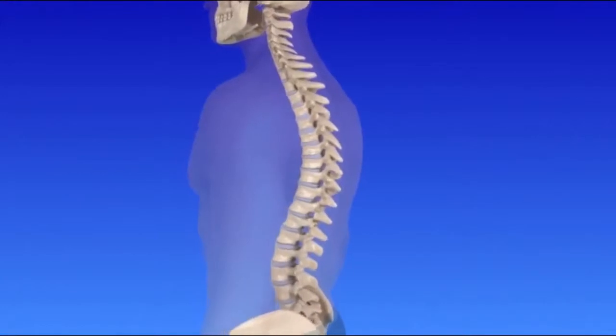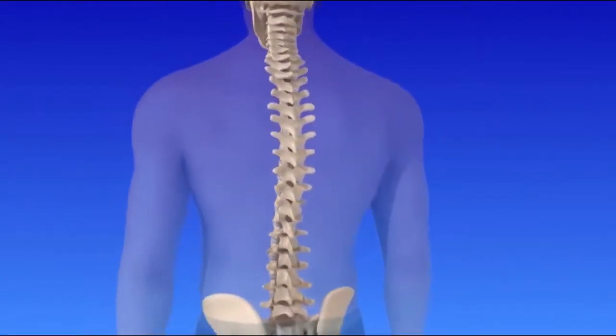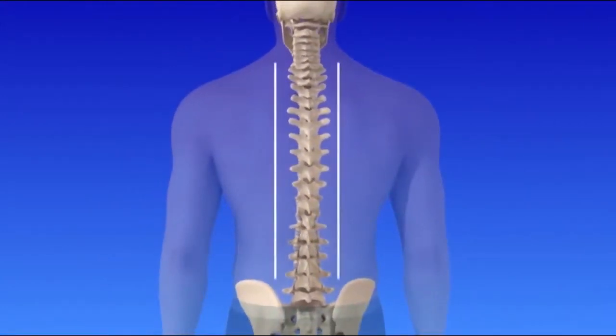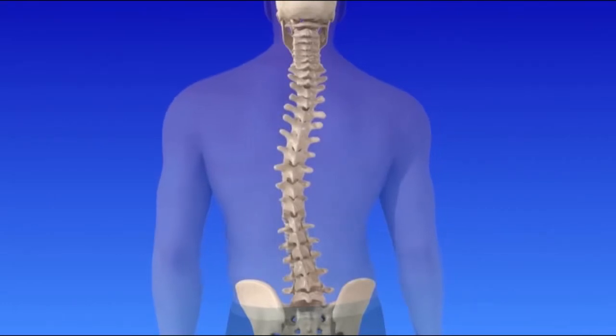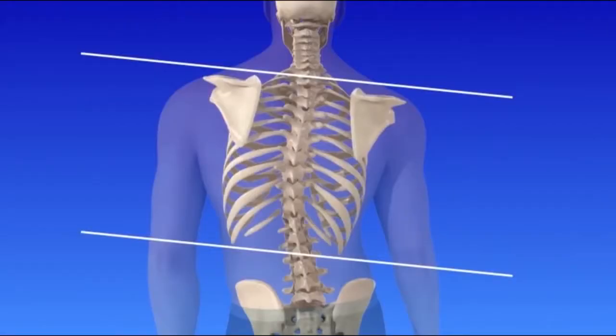Scoliosis is basically an abnormal curvature of the spine. The normal spine, if you look from the front, should be straight; if you look from the side, it should have normal curves. But in scoliosis, the spine is not straight — it's actually twisted. It is a three-dimensional deformity: from the front you see a curvature, and from the back you can see what we call a hump, where one side of the back is higher than the other.